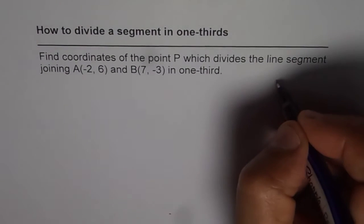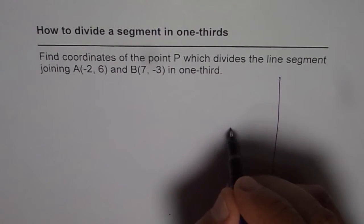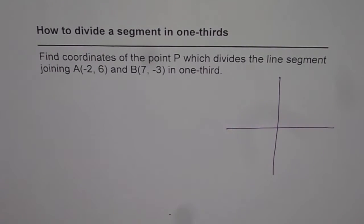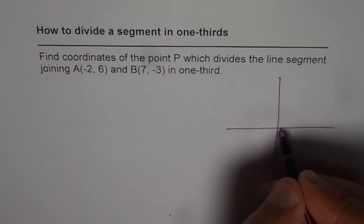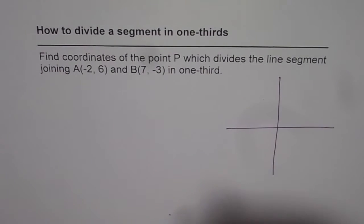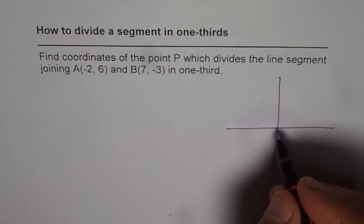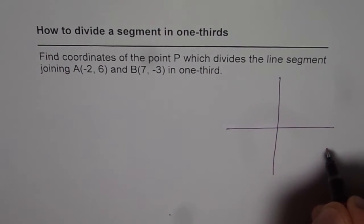So let me sketch this so that we understand what the question is. We have two points: A which is (-2, 6), let's say (-2, 6) is somewhere here, and B is (7, -3), (7, -3) is somewhere there.